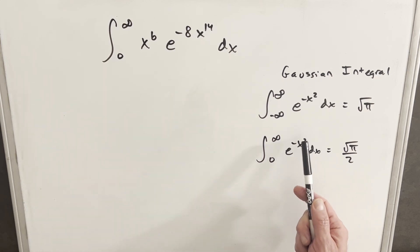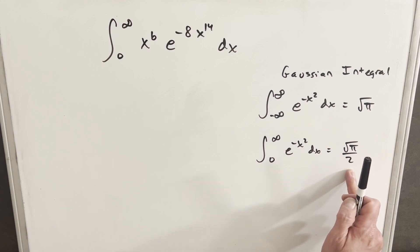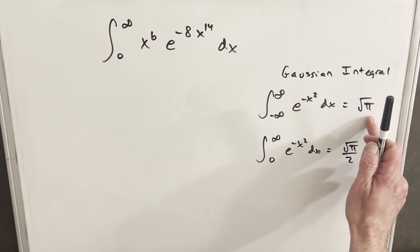Okay, and then if we do that, because this is an even function, with an even function you change the bound, bring a 2 out front, dividing by 2 you get this square root of pi over 2. So really similar to this first part.